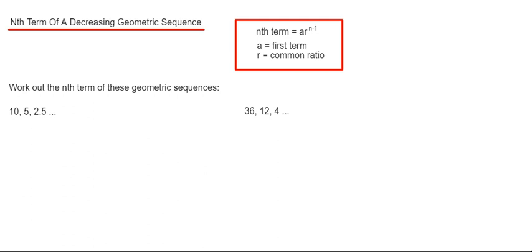The formula for a geometric sequence is a times r to the power of n minus 1, where a is the first term of the sequence and r is the common ratio.